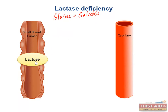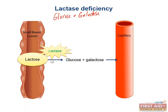A deficiency of lactase can either be hereditary, which is commonly found in the Asian and Native American population, age-dependent, or transient, following a bout of gastroenteritis. Symptoms of lactase deficiency and subsequent lactose intolerance include bloating, cramps, and osmotic diarrhea.